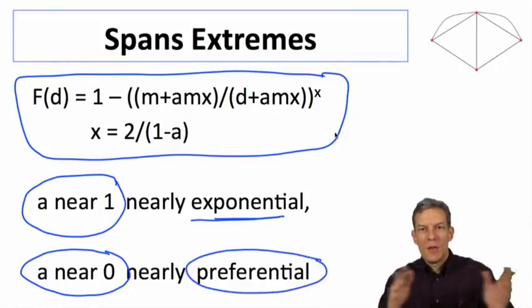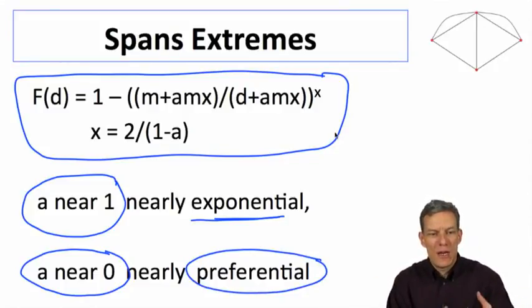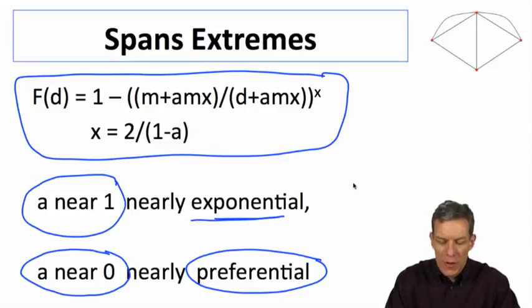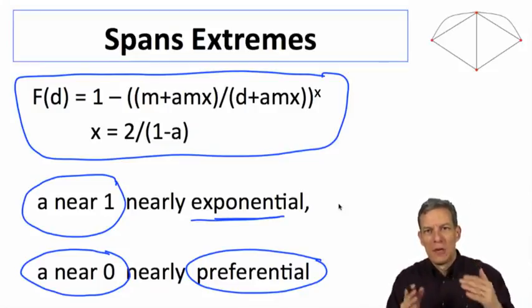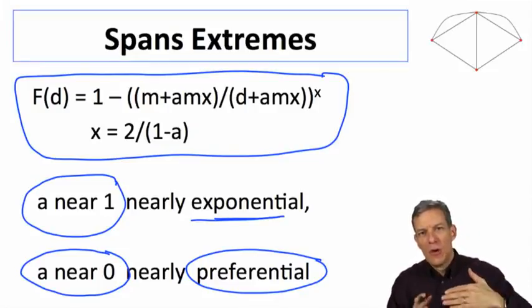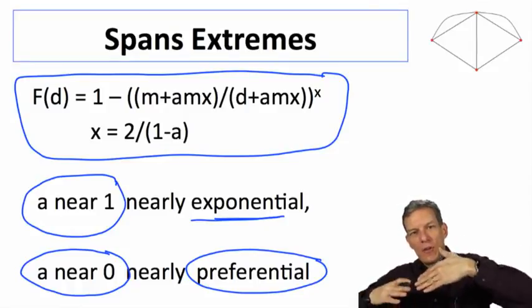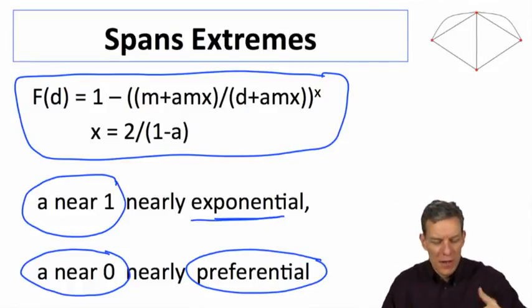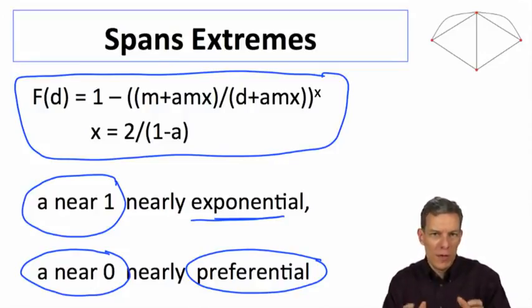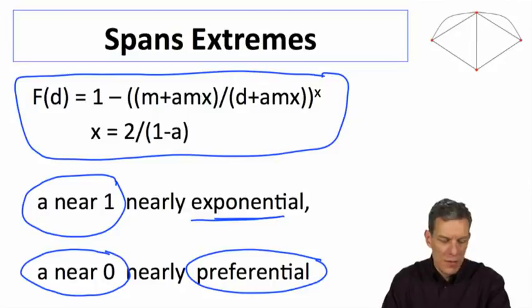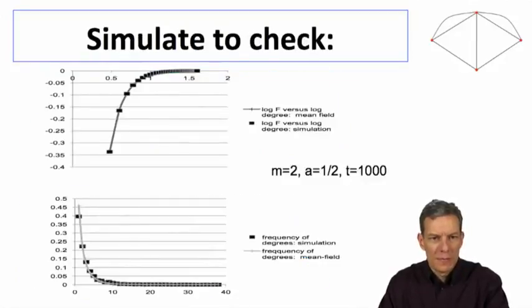This spans between those different distributions, and as we change a, we're going to end up with a distribution which looks either like this negative exponential or begins to span out and look more like a power law distribution as we let a become close to zero and almost all the links be formed via the friends of friends, which gives us preferential attachment.